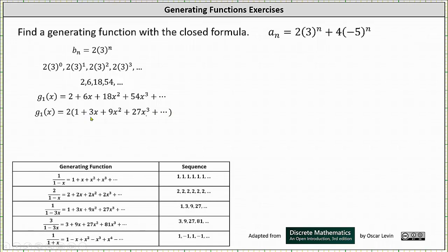Focusing on the series inside the parentheses, this one should look familiar. The corresponding sequence is 1, 3, 9, 27, and so on, where the generating function is 1/(1 − 3x). Recall we found this generating function by replacing x with 3x in the generating function for the sequence of ones. This indicates that g1(x) equals two times 1/(1 − 3x), which gives us 2/(1 − 3x).